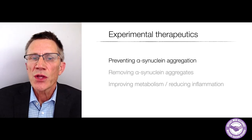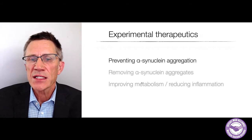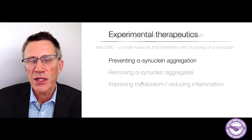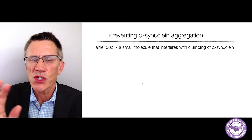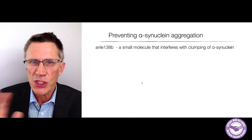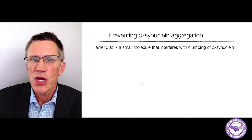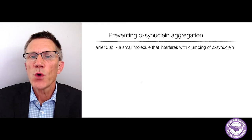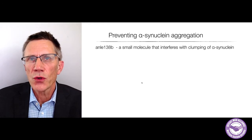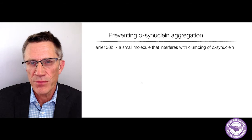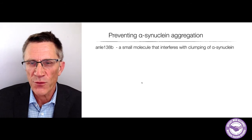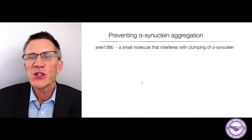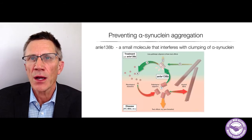Let me start with preventing synuclein aggregates. There is a small molecule called ANLI-138B which has been shown to interfere with the clumping of alpha-synuclein. Recall that monomeric synuclein can form oligomers, which can then proceed to form fibrils or amyloid — a process we don't want.